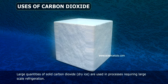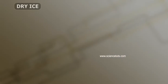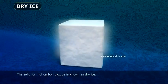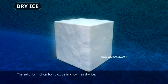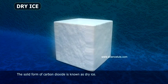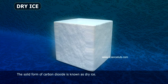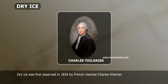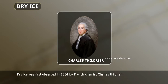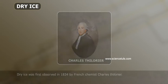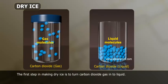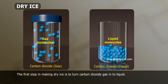The solid form of carbon dioxide is known as dry ice. Dry ice was first observed in 1834 by French chemist Charles Thilorier. The first step in making dry ice is to convert carbon dioxide gas into liquid.